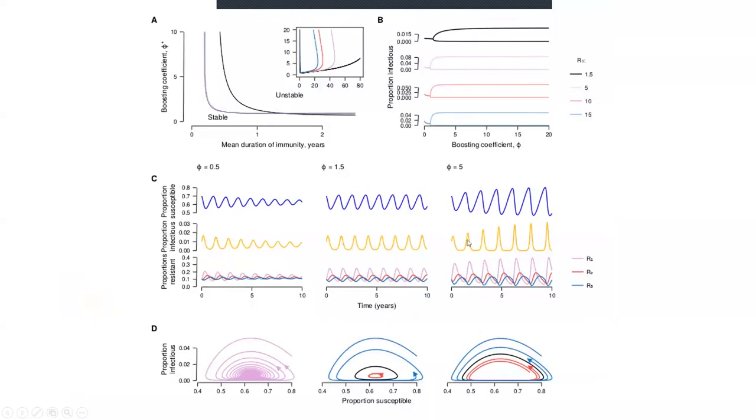What you find is that as you turn up the amount of immune boosting, so if you go from the left hand plot to the right hand plot, you get bigger and bigger oscillations. This is because each time there's an outbreak, a bigger proportion of the population gets kept in the immune compartment.